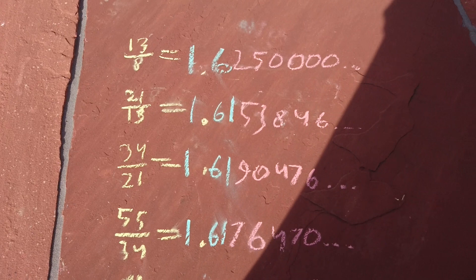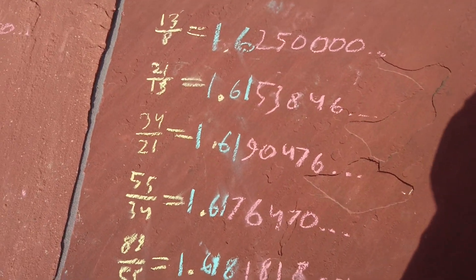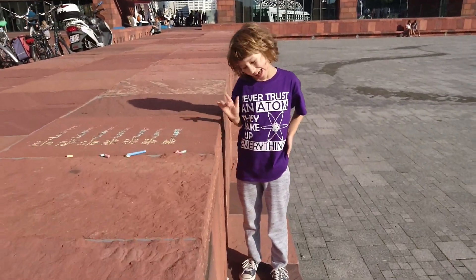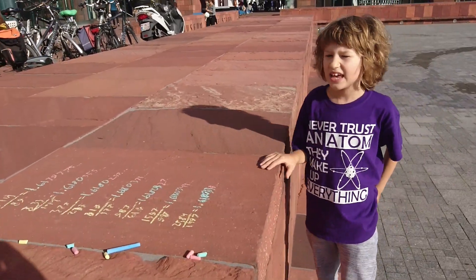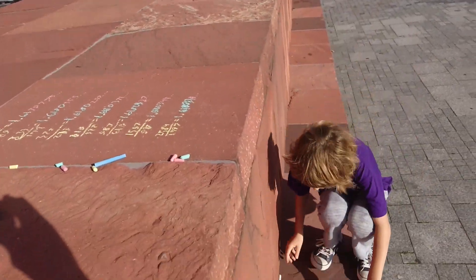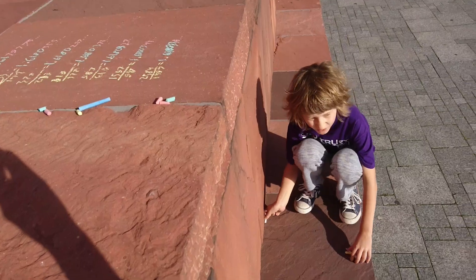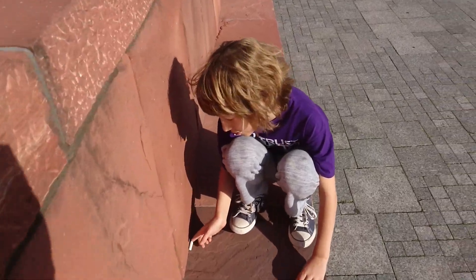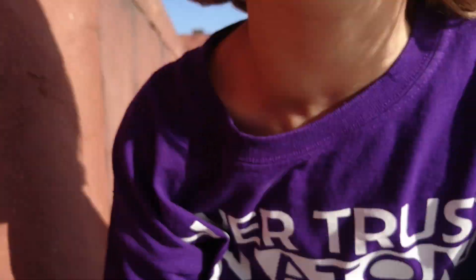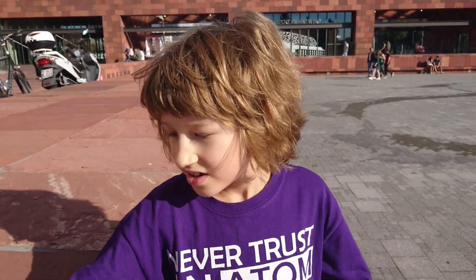2,584 divided by 1,597 equals 1.6180338 — that should be a 9, so it's an 8. But I'm still very happy, because this is a really bad algorithm. However, it's one of the best algorithms for phi, and that's because phi is the least well-approximated by a rational number.